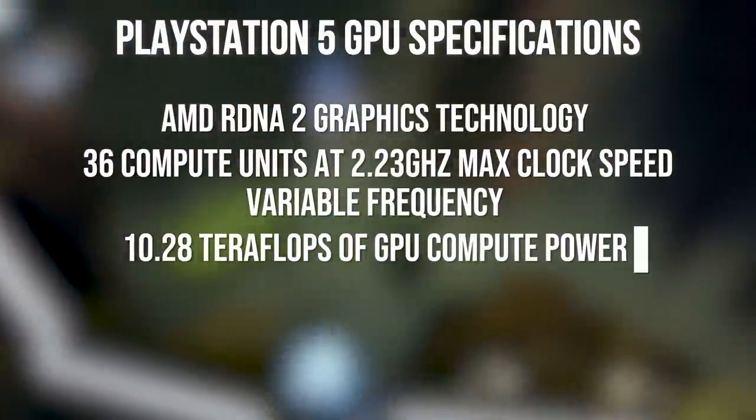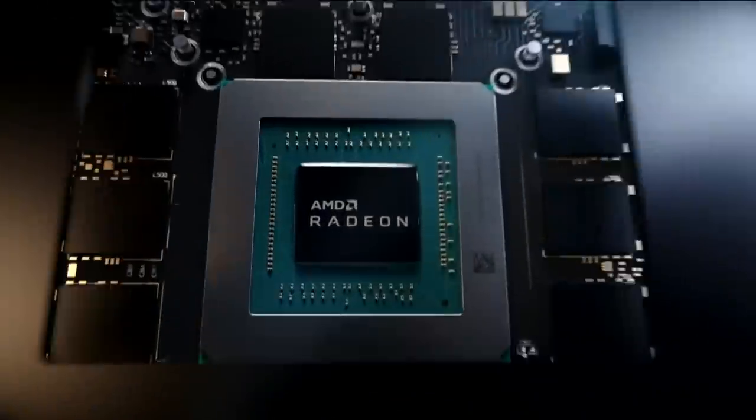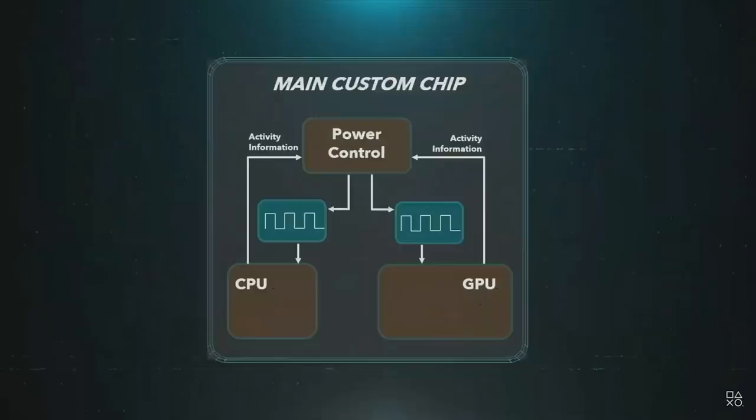We've really got to stress the boost clock strongly here, because boost means different things. On a mobile phone, a boost clock increases frequencies until the device overheats and throttles back. AMD GPU boost on RDNA adjusts frequencies according to power, temperature, and various variables within the GPU. Sony has a very specific implementation tied to the thermal limits of their cooler, which Mark Cerny suggests would be an improvement over the acoustic performance of PS4 and PS4 Pro.